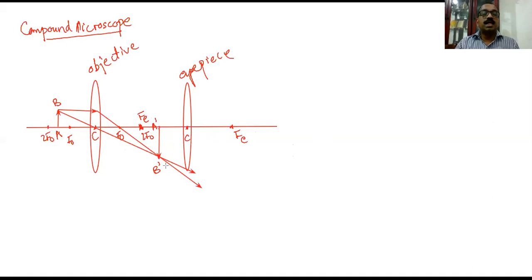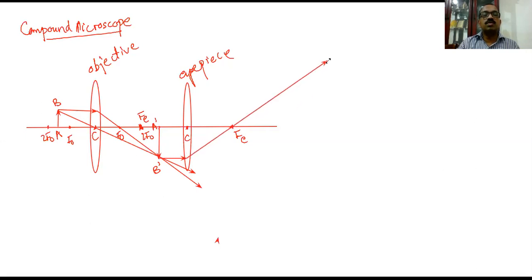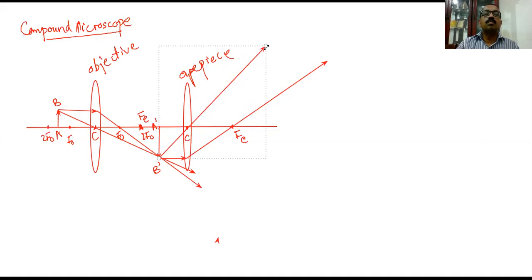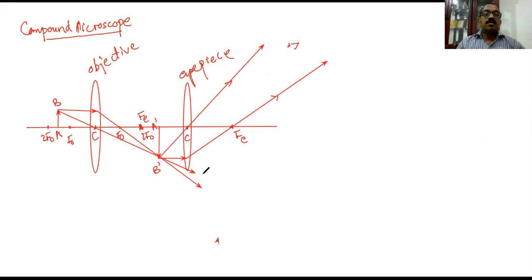Now take A'B' as the object and draw the ray diagram for image formation by the eyepiece. One light ray goes through the focus; another goes through the optic center — going straight. Looking from the side, you get a virtual image. To find the position of the virtual image, extend the rays backwards with dotted lines. Virtual images must be drawn with dotted lines.